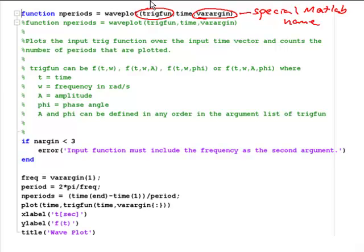Trigfun is defined elsewhere as a function, and this function M-file was written to accept that function in four forms: a function of t and omega for frequency, a function of t, omega, and A for time, frequency, and amplitude, a function of t, omega, and phi for time, frequency, and phase shift, or a function of t, omega, A, and phi in our most general case.